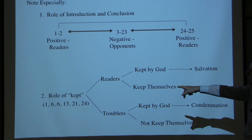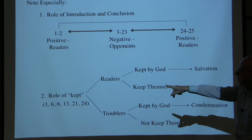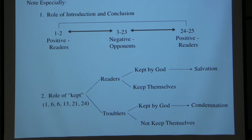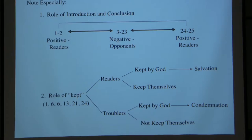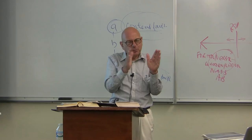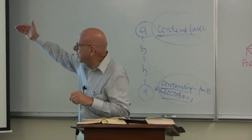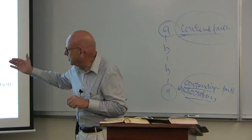Notice the recurrence of the word 'kept' — some six times, twice in one verse, verse 6. The readers are said to be kept by God for salvation and to keep themselves, whereas the troublers are kept by God for condemnation and have not kept themselves. So 'kept' is used to emphasize the difference: the readers are kept for one thing and keep themselves for one thing, while the ungodly are kept for another thing and do not keep themselves. The word 'keep' is very important here.